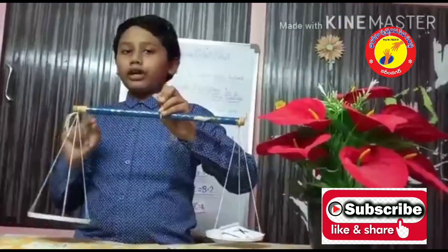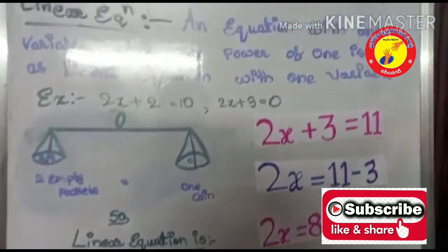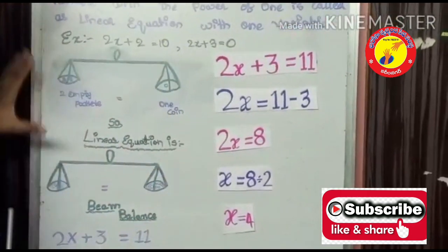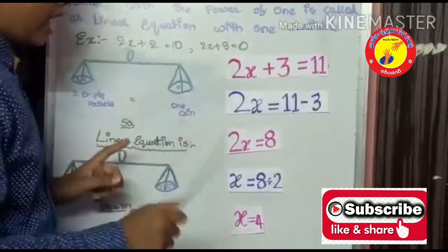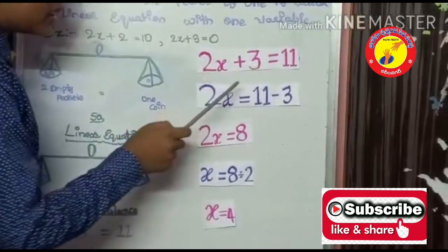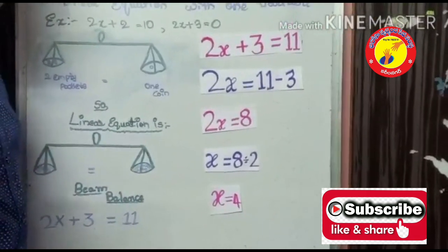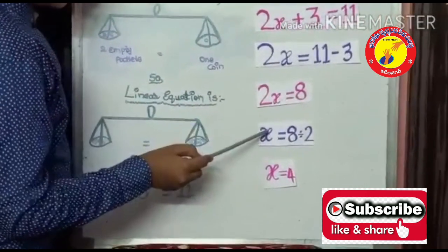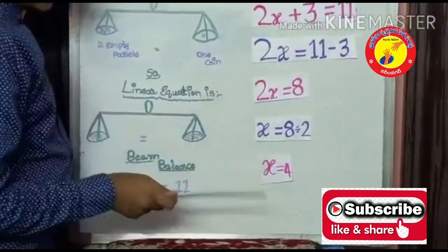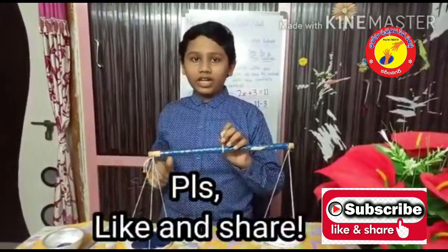To make this clearly understood, I am going to explain it on the board. I have written the equation we achieved: 2x plus 3 equals to 11. Subtracting 3 from both sides gives 2x equals to 11 minus 3, which means 2x equals to 8. Dividing 8 by 2, we get the value of x equals to 4. I think this would be useful — if you like my explanation, please give a like and share. Thank you!